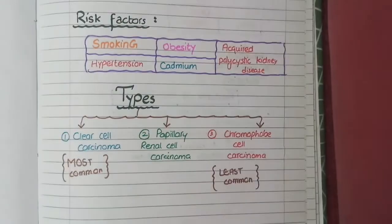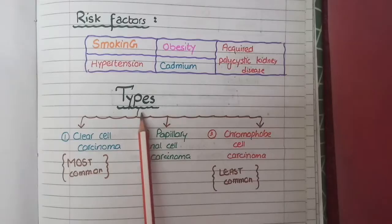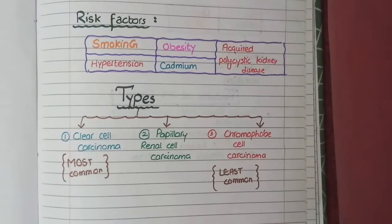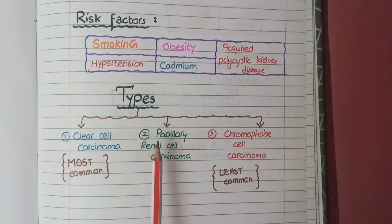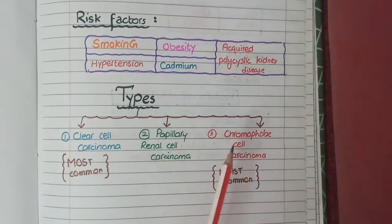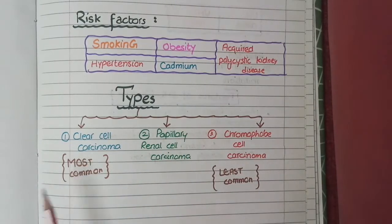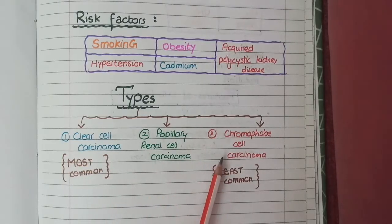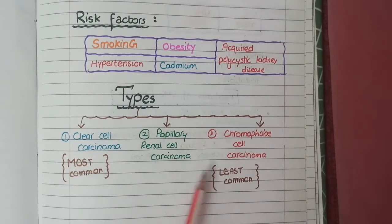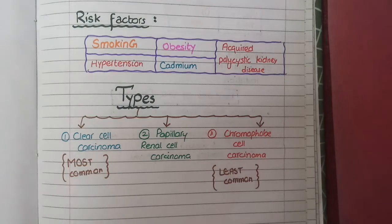Based on histopathological features, there are three types of renal cell carcinomas. First is clear cell carcinoma, second is papillary cell carcinoma, and third is chromophobe cell carcinoma. Out of all these types, clear cell carcinoma is the most common and chromophobe renal carcinoma is the least common.